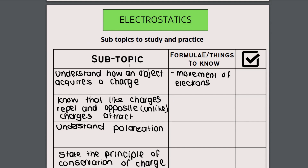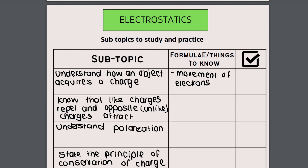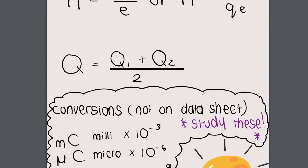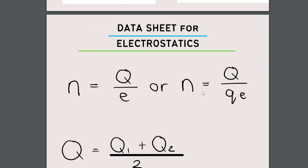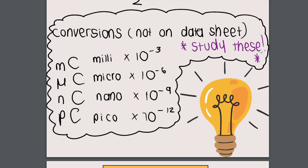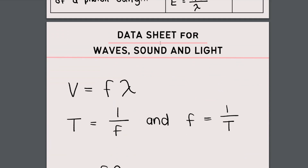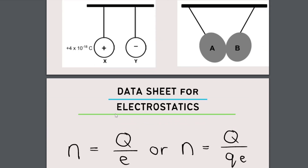Electrostatics is all about charged objects. Objects can have a neutral charge — meaning their overall charge is zero — or they can be positively or negatively charged. How they acquire this charge depends on the movement of electrons. Electrostatics is a really cool subtopic, and here are all the mini topics that fall under it. In grade 10 you only need to know the two formulae I provide. Something not given on your official exam data sheet are the conversions, so make sure you study those — your teacher will also give them to you.